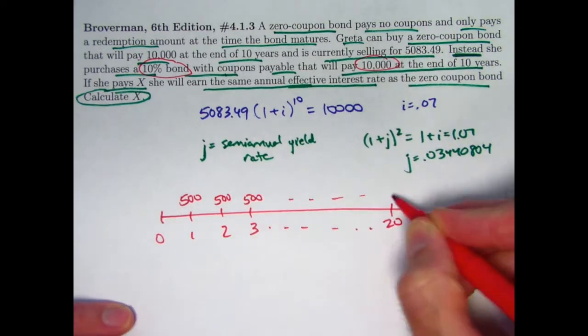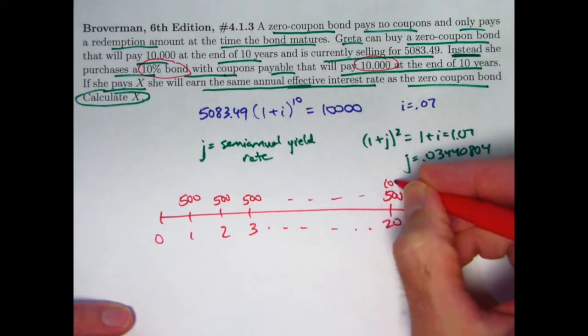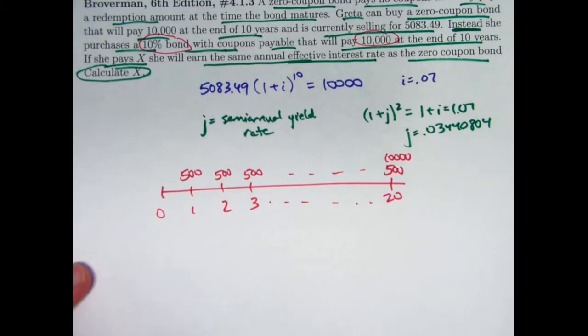That's Greta's amount of her coupons. And then she's going to get 10,000 at the end. So now it's just a matter of calculating the present value of this payment stream. That will be the value X that we want.